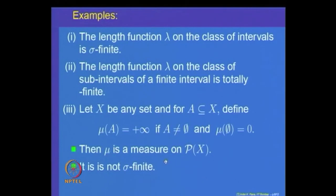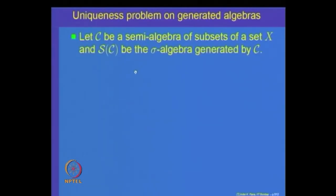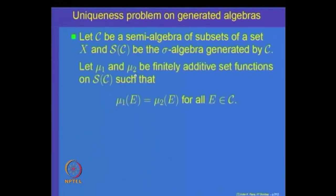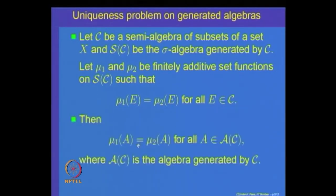The theorem we want to prove today is the following. Let C be a semi-algebra of subsets of a set X and S(C) be the sigma algebra generated by C. Let mu_1 and mu_2 be two finitely additive set functions on S(C) such that mu_1(E) = mu_2(E) for all E belonging to A(C), where A(C) is the algebra generated by C. As a first step, we are going to prove that if two measures mu_1 and mu_2 defined on a semi-algebra agree on C, then they also agree on the algebra generated by that semi-algebra.